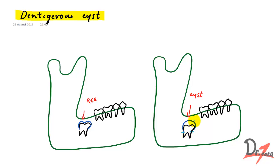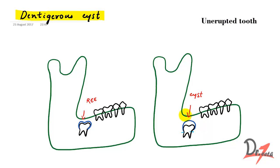So this is what a dentigerous cyst is. A dentigerous cyst is a cyst that originates by the separation of the reduced enamel epithelium and the crown of an unerupted tooth, and is attached to the crown of an unerupted tooth at the CEJ. Always keep in mind three terms: unerupted tooth, separation, and CEJ.